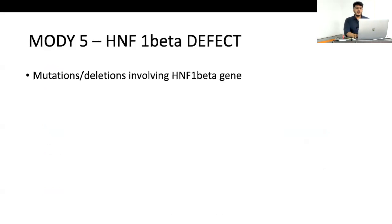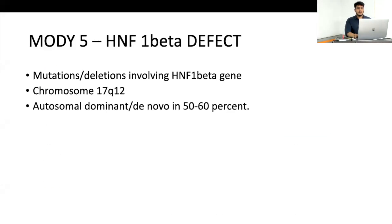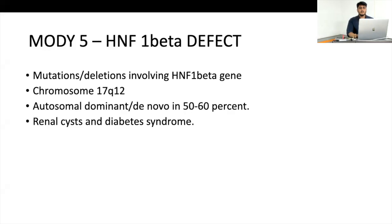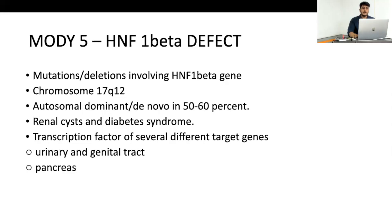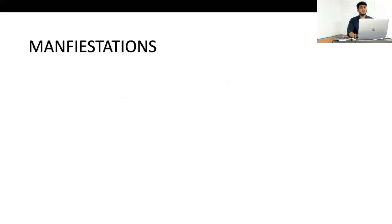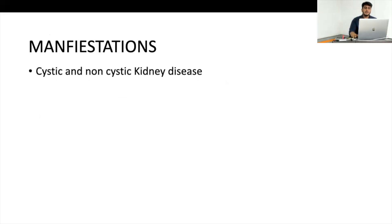HNF1B is a promoter responsible for transcription of various genes in the urinary and genital tract — the most common site of association. Pancreas is the second most common, followed by brain, parathyroid gland, and liver. The most common manifestation is cystic and non-cystic kidney disease, as HNF1B is responsible for nephron development up to the upper part of the ureter. This explains the pelvic dilatation seen in our patient. Other renal associations include polycystic kidneys, horseshoe kidneys, renal agenesis, and renal hypoplasia.